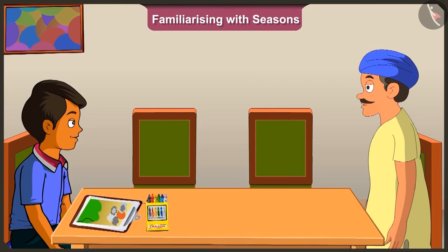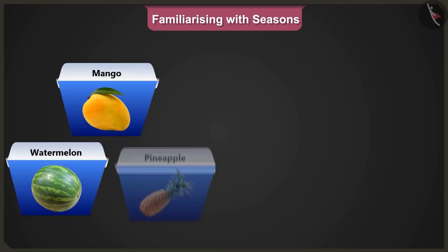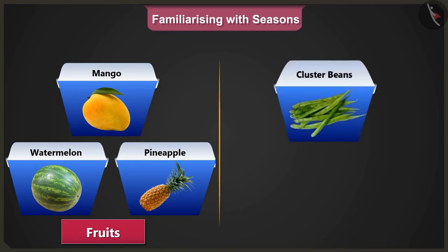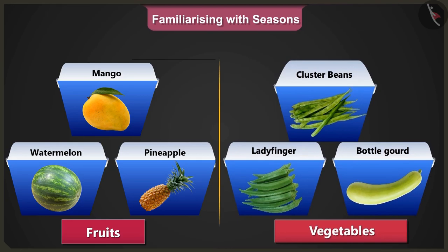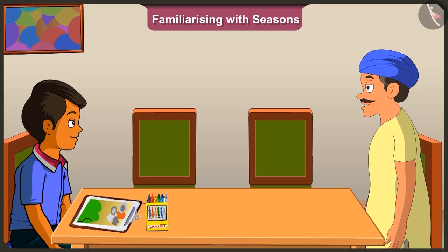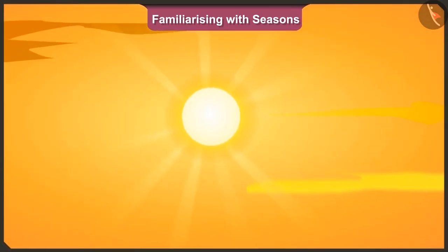Chotu, fruits like mangoes, watermelon, pineapple and vegetables like cluster beans, ladyfinger, gourds all come in the summer season. Chotu, in the summer season, there is strong sunshine also.